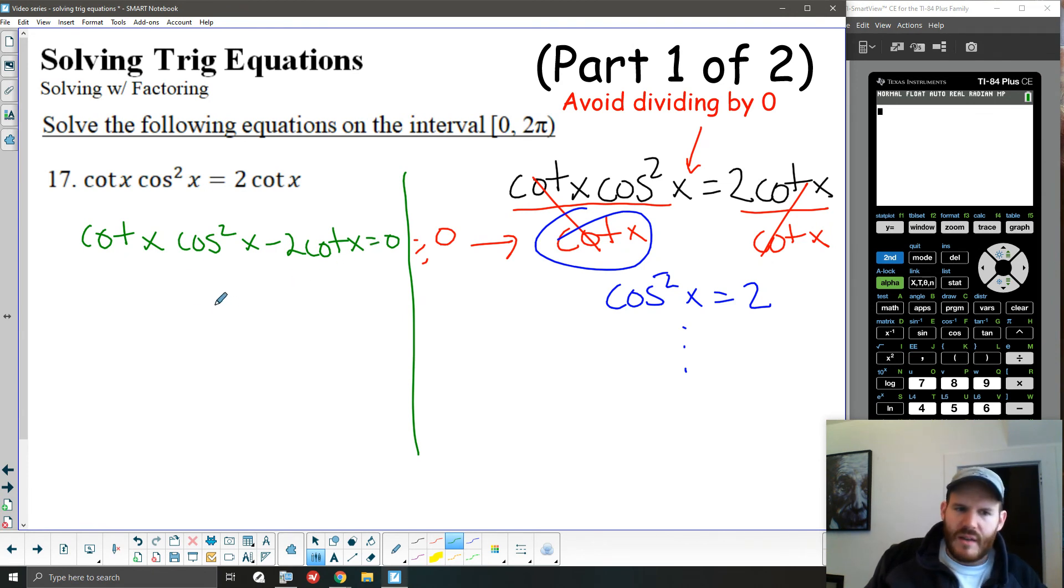Rewriting it this way, now I can go through solving basically just common factor of cotangent I could take out, just like we did with our first example in this video. And I wind up with cosine squared x minus 2 equaling 0. From here we can use the zero product property, but you'll notice that now I have captured that possibility for cotangent to be 0.